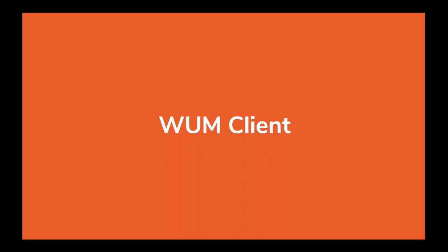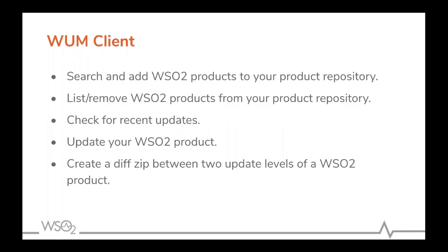My colleague Kasun will now be demoing the WAM client tool and its functionalities. WAM client is a command line tool that you can use to download or add WSO2 products and to update them. It allows you to search and add WSO2 products to your product repository — that is the location in your local file system where WAM client manages WSO2 products. It also allows you to list or remove WSO2 products and check for the availability of updates.